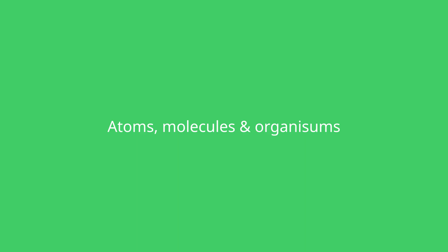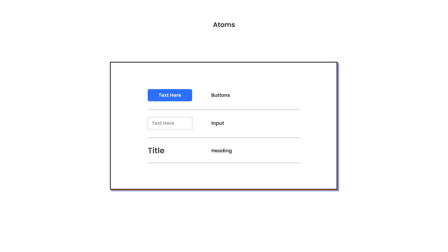Let's get on with the video. So what are atoms, molecules and organisms? Atoms are the smallest part of your interface. The smallest part of your interface could be a button, it could be text such as heading text, and it can also be an input.